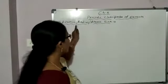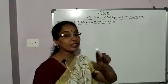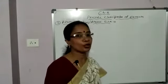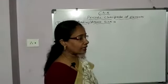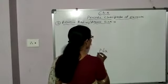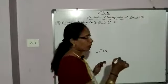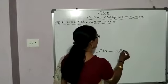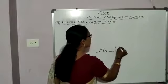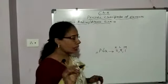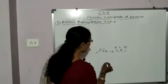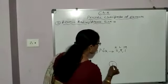The second atomic property is atomic radius, or atomic size. To understand this, let's take the example of sodium. Sodium has atomic number 11, and its electronic configuration is 2, 8, 1. So electrons are filled in 3 shells: K, L, and M. Atomic number equals the number of protons.